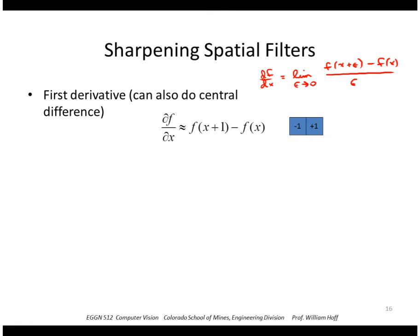I can also look at second derivatives. A second derivative would just be the derivative of the first derivative. So, it would have this form. f of x plus 1 minus 2 f of x plus f of x minus 1. And, as a mask, it would be a 1 by 3 mask with a plus 1 minus 2 plus 1. We'll see how these masks can be used for detecting edges.